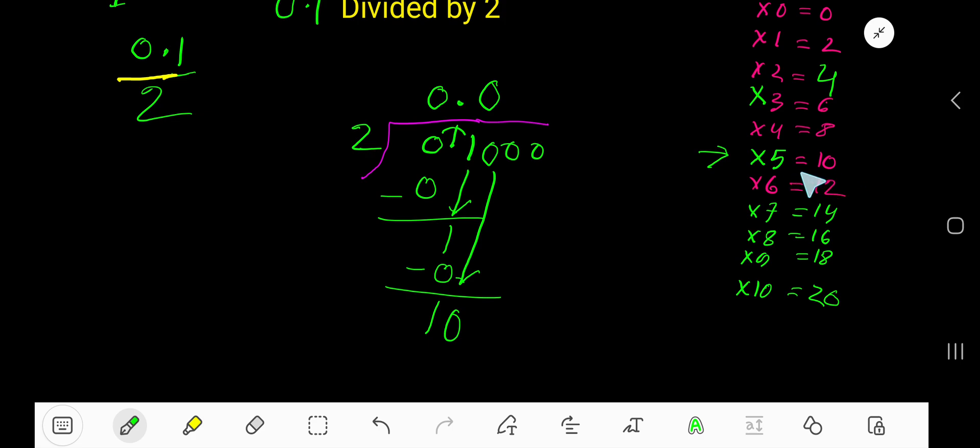5 times. Write 5. 5 times 2 is 10. So your answer is 0.05.